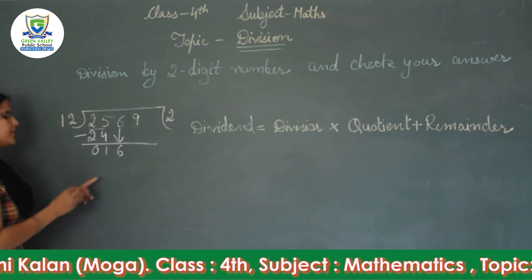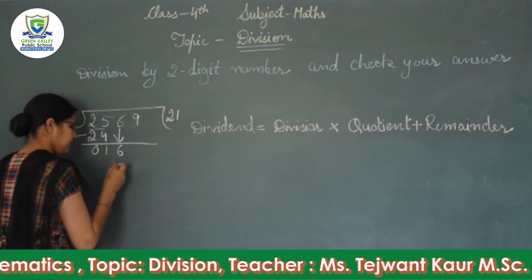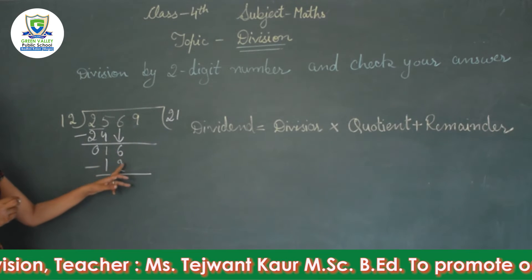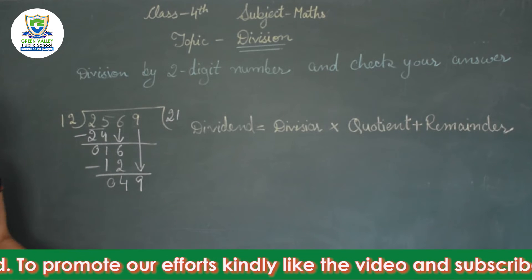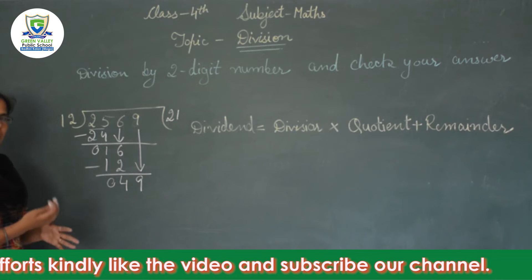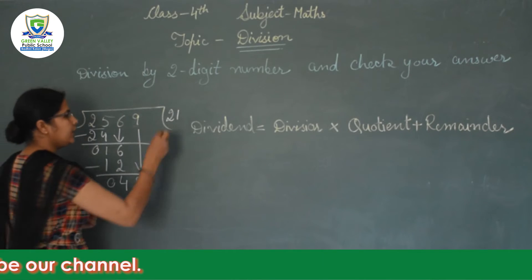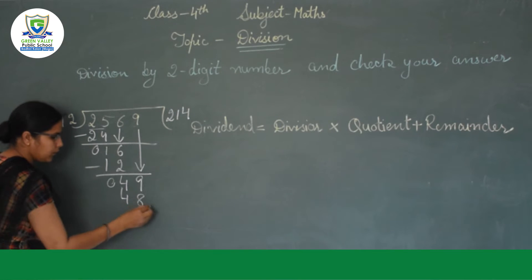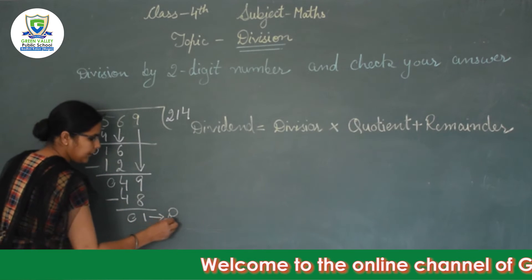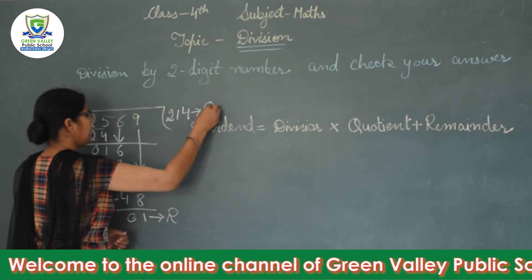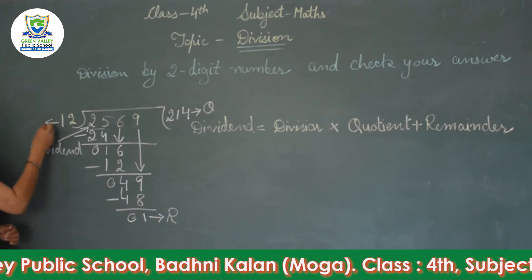We bring down the next digit to get 49. Reading the table of 12, we need a product equal to or less than 49. 12 fours are 48. Subtracting: 9 minus 8 is 1, and 4 minus 4 is 0. So the remainder is 1 and the quotient is 214. The dividend is 2569 and the divisor is 12.